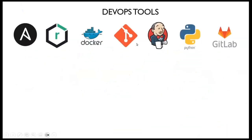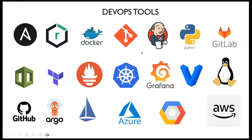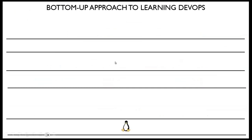These are the DevOps tools — as a DevOps engineer you need to know quite a number of them. But the key question is: do you really need to understand all of them? The answer involves a bottom-up learning approach. The first thing to learn as a DevOps person is Linux, because every tool you want to learn is built on the Linux operating system.